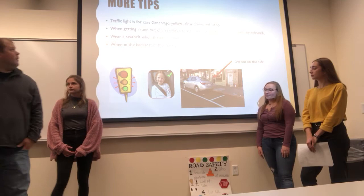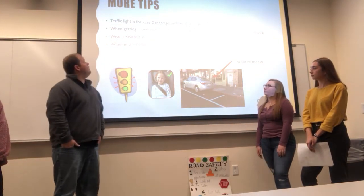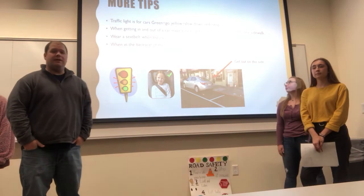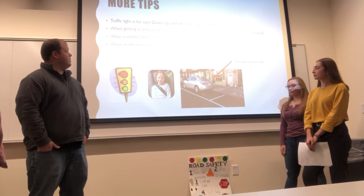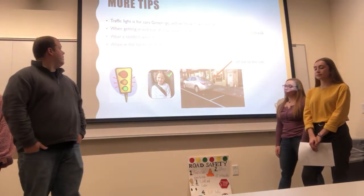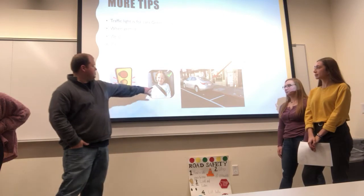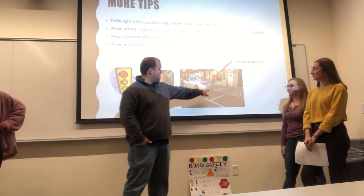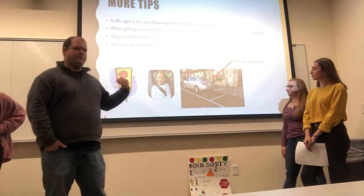Some more tips we have are about traffic lights — yes, they're used for cars, but we have to obey them as well. Green means go, yellow means slow down, and red means stop. When getting in and out of the car, make sure you get out on the sidewalk side, away from the road. Wear a seat belt every time you're in a car, and when in the back seat try not to distract the driver. Here's a good picture of a seat belt in the right position, and here is a good picture of getting out of the vehicle on the sidewalk side rather than into where the cars come.